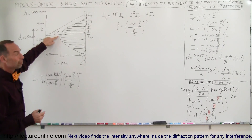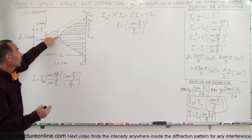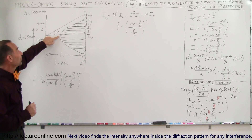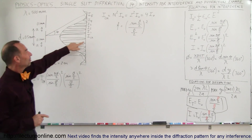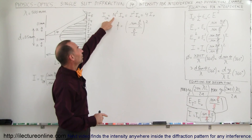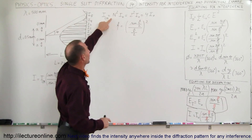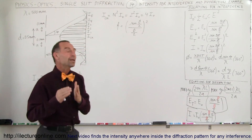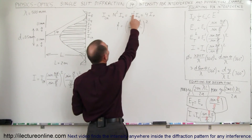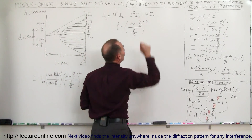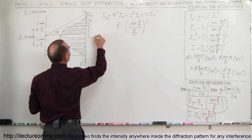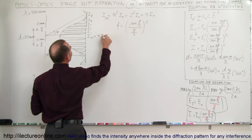At the very center we're going to get the maximum intensity, and the intensity at the central maximum is simply going to be the number of slits squared times the intensity of a single beam. In this case, that's two slits squared times I₀, which is four times I₀. So the intensity of the central maximum is simply equal to four times I₀.